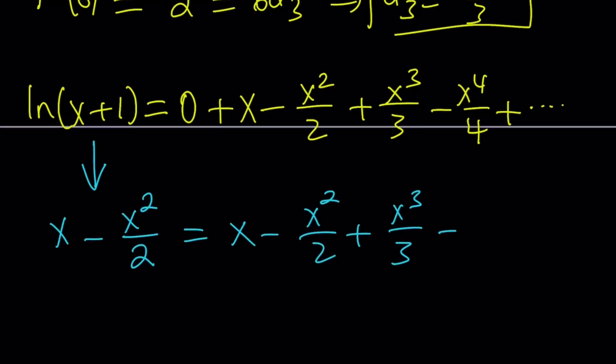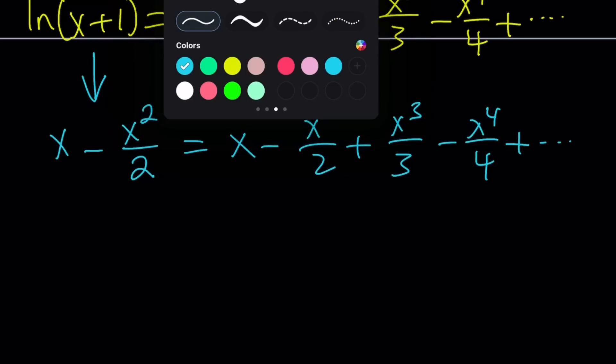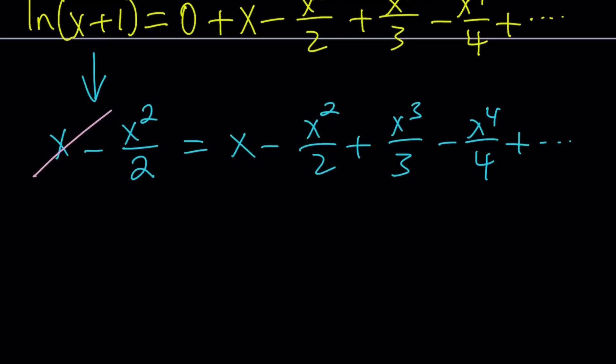So we have to pretty much write all the terms, dot dot dot. But notice that we have the x minus x² over 2. That's actually the motivation behind this problem, by the way. So we're going to simplify this. Because these two cancel out, these two cancel out, leaving us with a 0, a giant 0 on the left-hand side, and a giant infinite polynomial on the right-hand side.